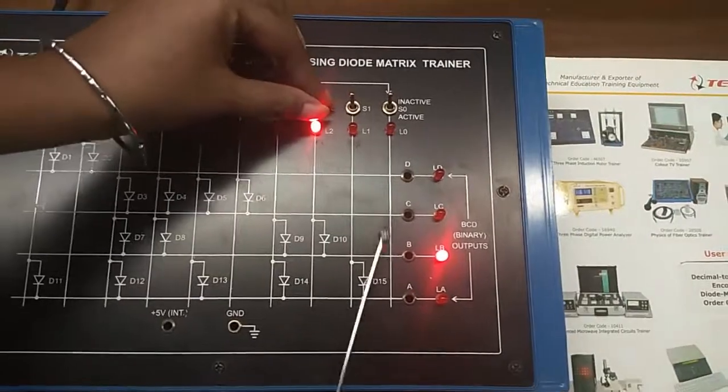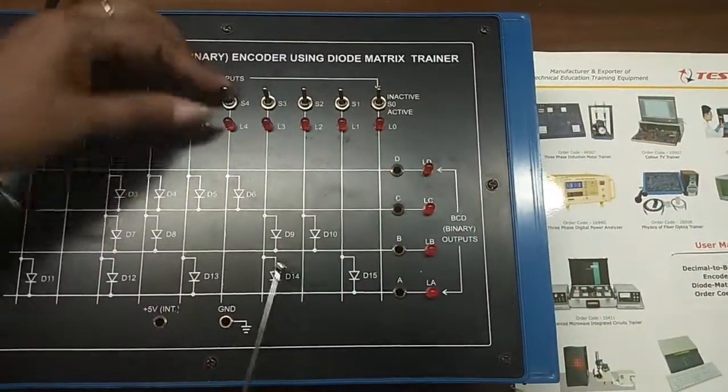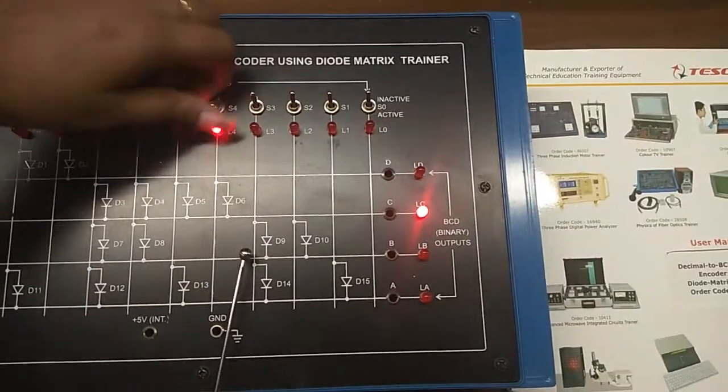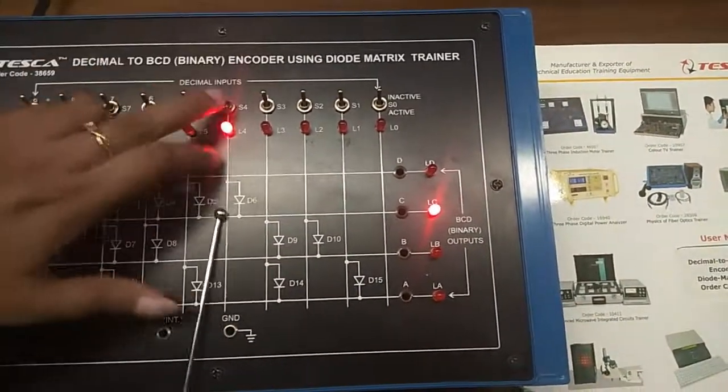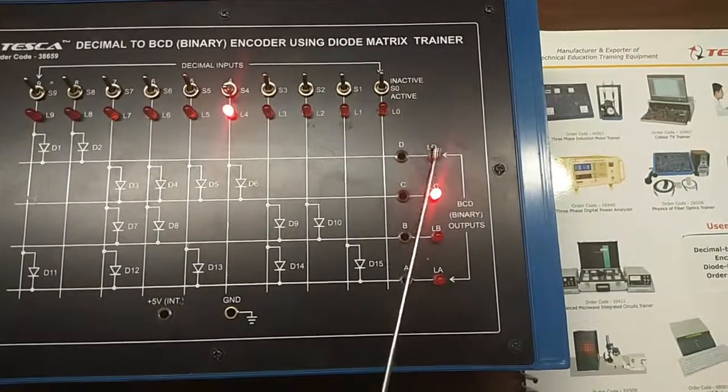Like this, L2, S3, S4. This is decimal input 4, and this is the binary output: 0100.